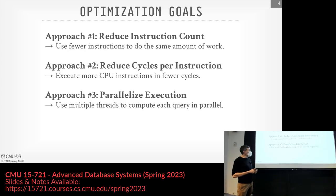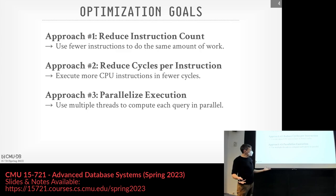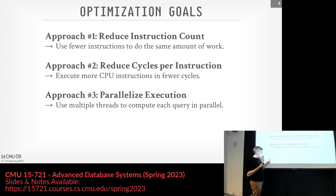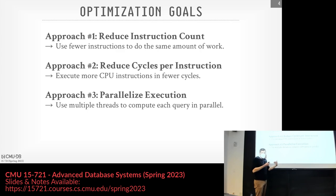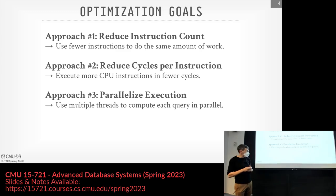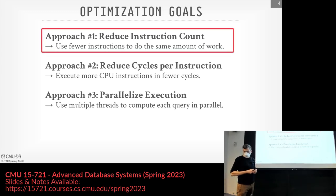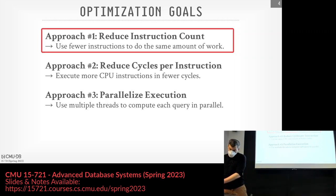Our goal is to make the database system run faster. The three approaches are to reduce the instructions we execute, reduce cycles per instruction, and maximize parallelism across multiple threads. You do this after you've already done zone maps, filters, and indexes to remove as much data as possible. Today we're going to use compilation as a technique to reduce the instruction count for all the operators in our database system.